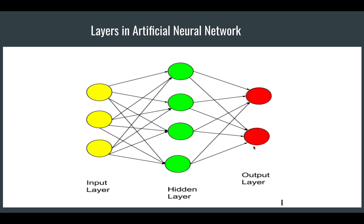We will revisit this in the coding part. To summarize so far: the input layer is determined by the number of features or image dimensions you feed in. The output layer depends on the number of classes. The hidden layer is something you specify in terms of number of neurons and number of layers, but what happens inside is hidden from us. You can use N number of hidden layers.